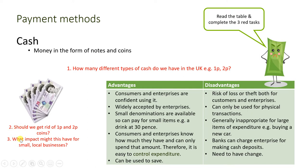Questions two and three ask: should we get rid of one pence and two pence coins, and what impact might this have for smaller local businesses? Consider why retailers price items at £9.99 rather than £10 — it's psychological. Removing these coins has implications for customer and business relationships, pricing of petrol, and trade between businesses like Tesco's and their farmers. Think about whether there are any positives as well as negatives.